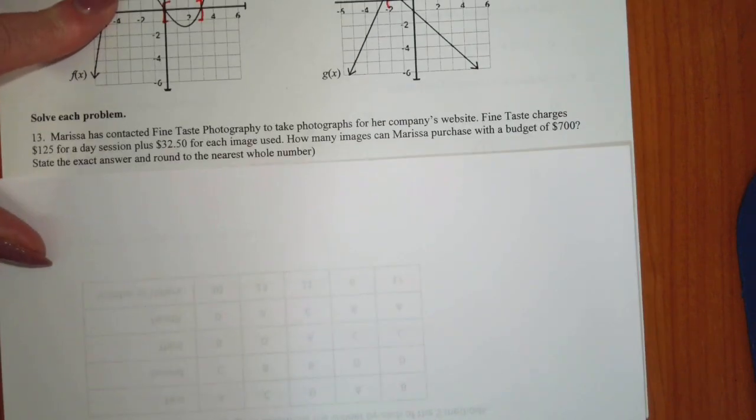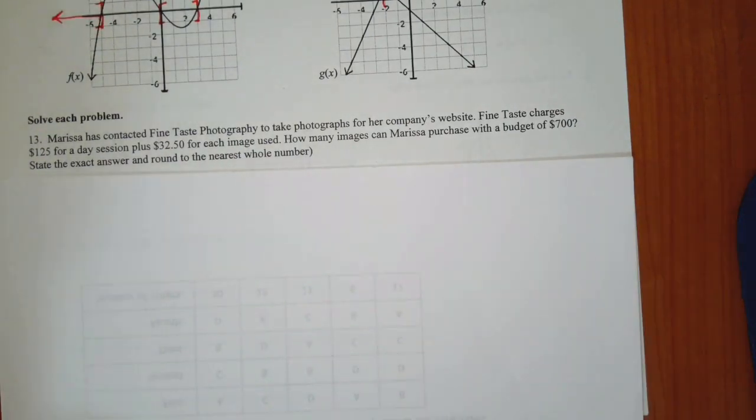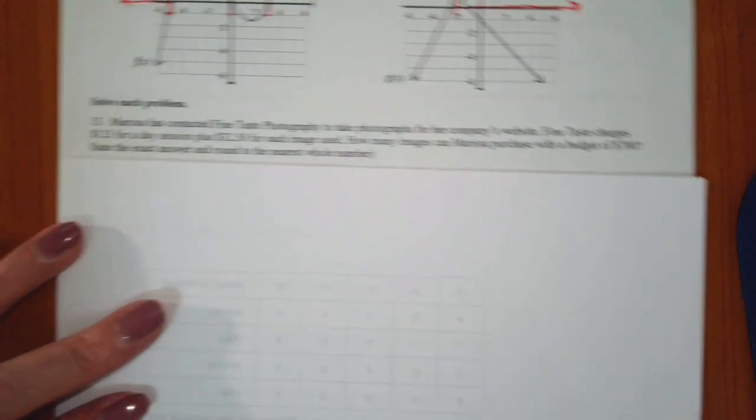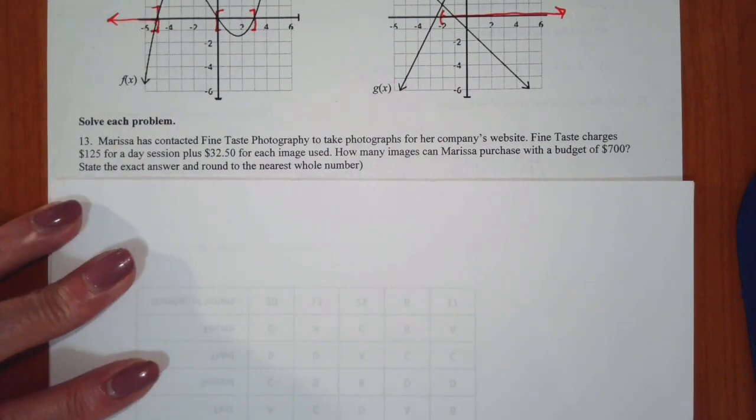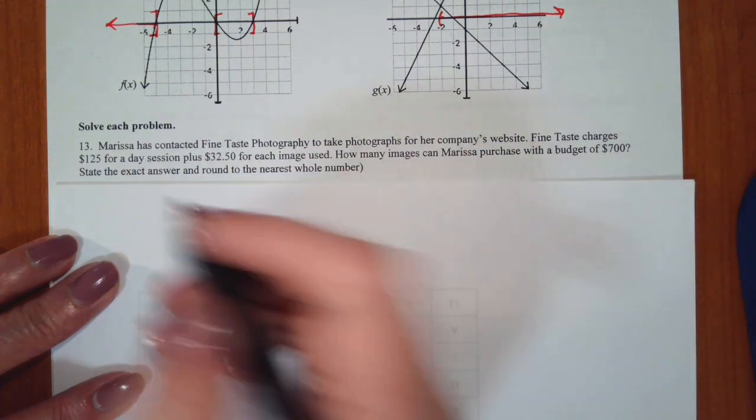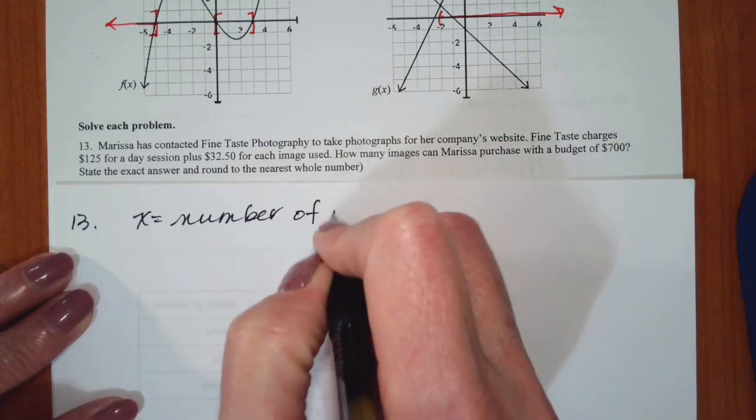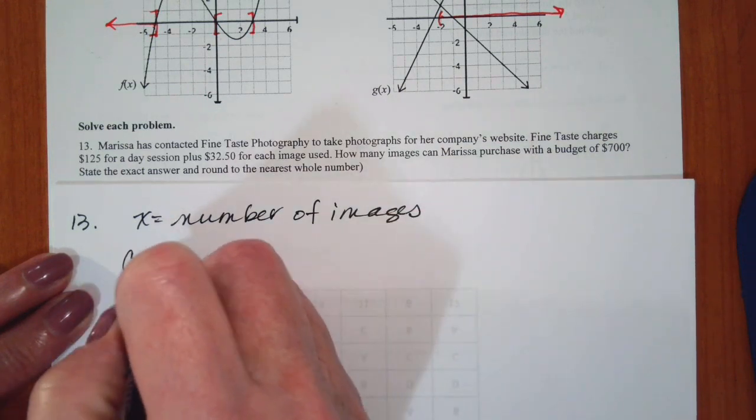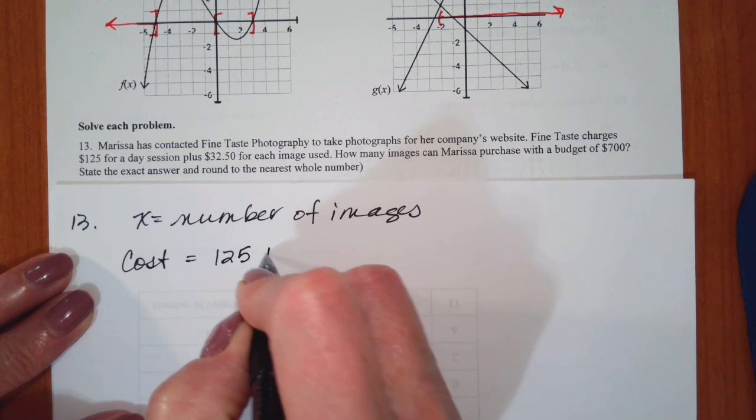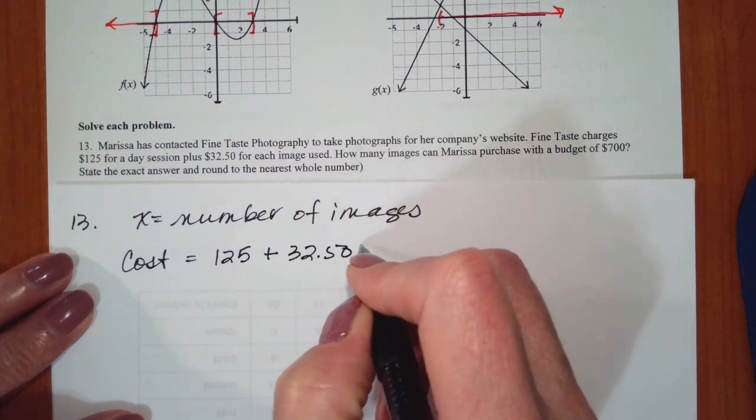Let's look at some application problems. The first one is, Marissa has contacted FineTaste Photography to take photographs for her company's website. FineTaste charges $125 for a day session plus $32.50 for each image used. How many images can she purchase with a budget of $700? You need to identify your variable, write an equation, then solve it. For problem 13, I'm going to let x equal the number of images. So the cost is going to be equal to 125 plus $32.50 per each image or x.